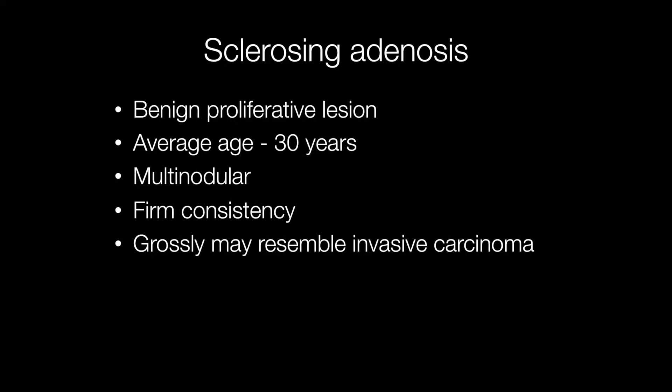The term sclerosing adenosis refers to the proliferation of the glandular structures and the dense, firm stroma in which these proliferating structures lie. It tends to occur in the third and fourth decades with an average age of around 30. The lesions may be multinodular and they can also be tender. Sclerosing adenosis has a firm consistency and may grossly resemble invasive carcinoma.